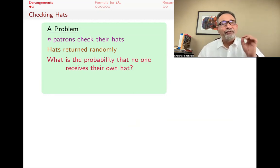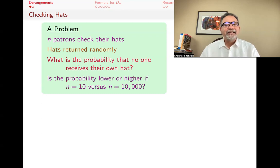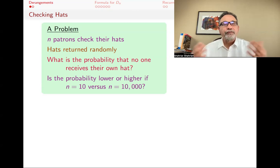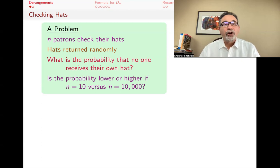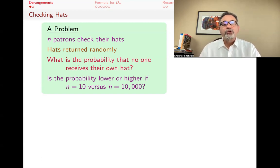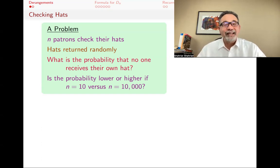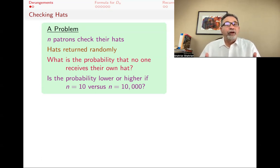A related, and in fact a little bit more interesting question is: is the probability lower or higher if N is 10 versus N is 10,000? So if you have 10 people, is it more likely that no one will receive their hat? Or if there's 10,000 people, what is the probability? Try to guess which one is going to be the bigger probability.